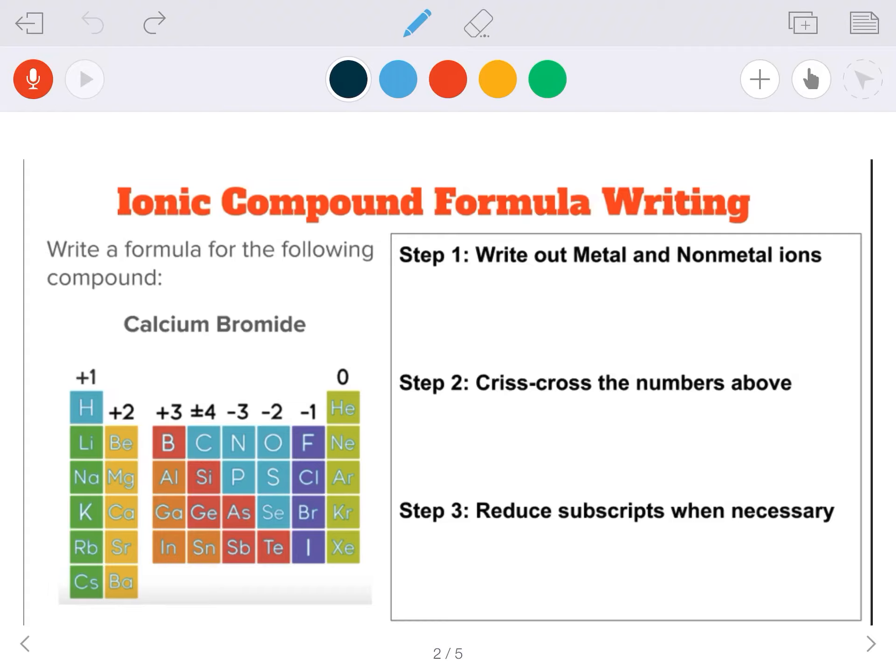Next example is calcium bromide. So we'll start with step one, writing out the metal and non-metal ions.